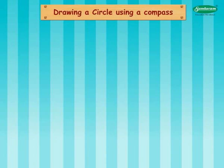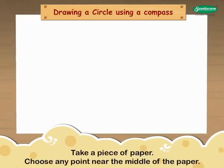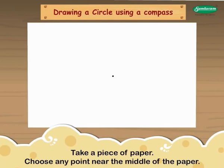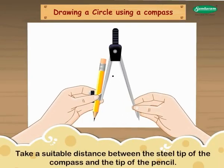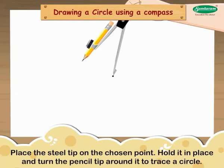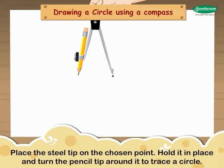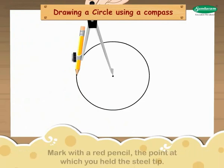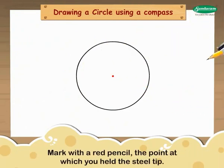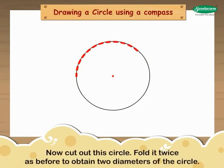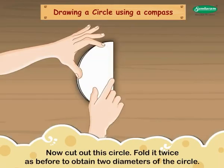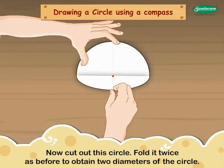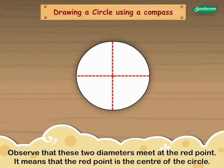Drawing a circle using a compass. Take a piece of paper. Choose any point near the middle of the paper. Take a suitable distance between the steel tip of the compass and the tip of the pencil. Place the steel tip on the chosen point. Hold it in place and turn the pencil tip around it to trace a circle. Mark with a red pencil the point at which you held the steel tip. Now cut out this circle. Fold it twice as before to obtain two diameters of the circle. Observe that these two diameters meet at the red point. It means that the red point is the center of the circle.